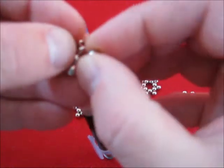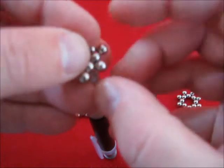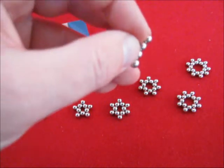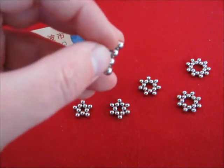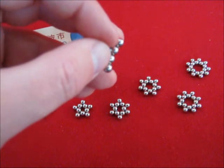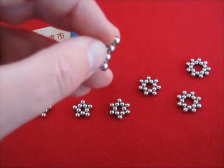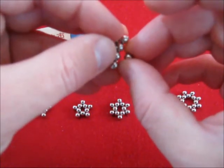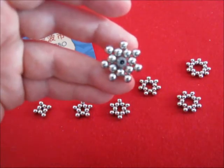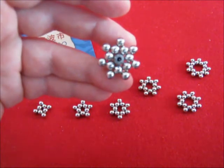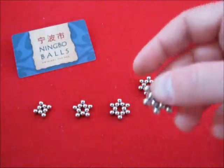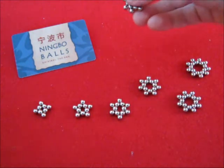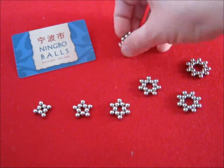Take a single ball. Take another single ball. And there we have a 7 pointed star. Now this one, it's still fairly stable. But as you see, not too stable.